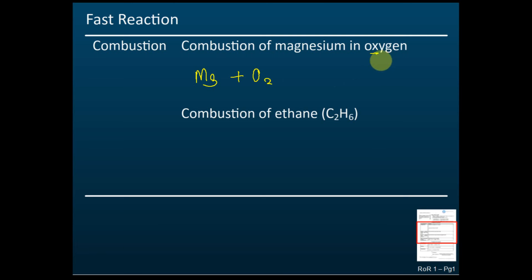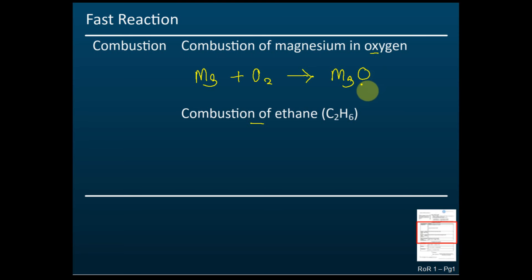For combustion of ethane, oxygen is not stated, but it's still combustion of ethane in oxygen — you need to assume oxygen is present. After combustion, magnesium forms magnesium oxide, MgO. We check whether this equation is balanced; it's not balanced, so we add coefficients to balance it. This gives us the balanced equation: 2Mg + O₂ → 2MgO.